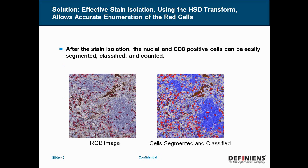After the stain isolation step, the nuclei and the CD8 positive cells can easily be segmented, classified, and counted. And that's shown here, where we have our original brightfield image, and then we have our overlay of our segmented and classified cells on the right.